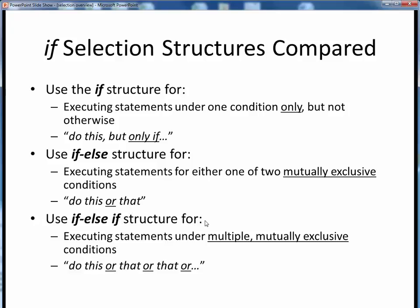Finally, the if-else-if structure is most appropriate if we want to execute different statements under multiple mutually exclusive conditions. For example, we want to do this or do that or do that for some arbitrary set of conditions. So taken together, these first three if-selection structures give us the logical frameworks to handle any type of decision-making needed in our programs.